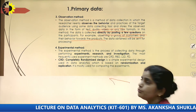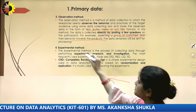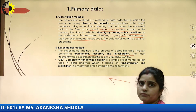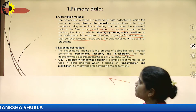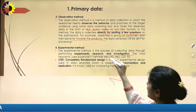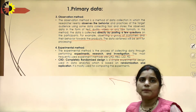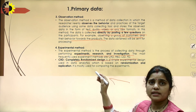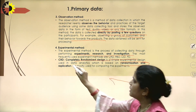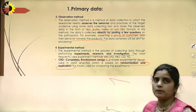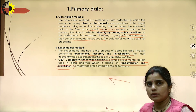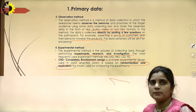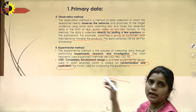The last method is the experimental method, in which data is collected through performing some experiments, research, and investigations. The most frequently used experiment designs are CRD, RBD, LSD, and FD. CRD stands for Completely Randomized Design — it is a simple experimental design used in data analytics, based on randomization and replications. It is mostly used for comparing experiments performed on a particular set of observations and then comparing the results.